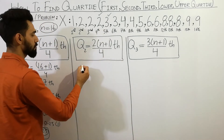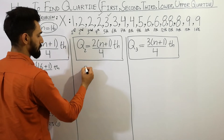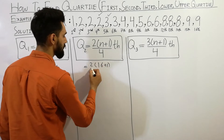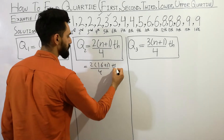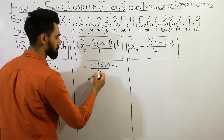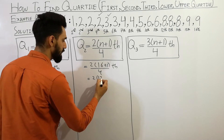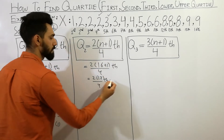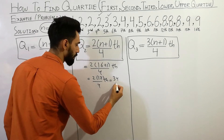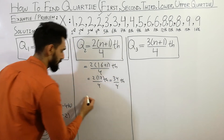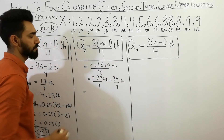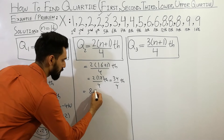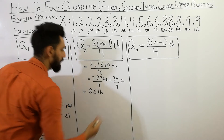Now I am going to calculate the second quartile. Similarly, you can calculate: 2 times (16 + 1) divided by 4, which is 2 times 17 over 4, giving 34 divided by 4, which equals 8.5th term.